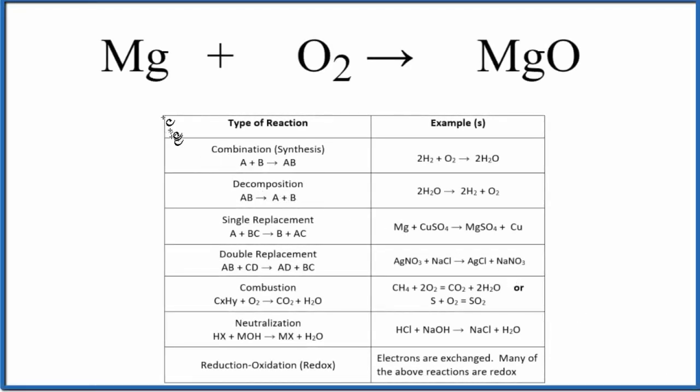In this video, we'll look at the type of reaction for Mg plus O2 gives us MgO. That's magnesium metal plus oxygen gas gives us magnesium oxide, a solid.